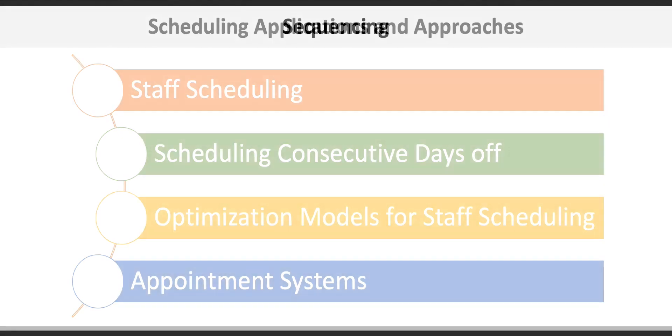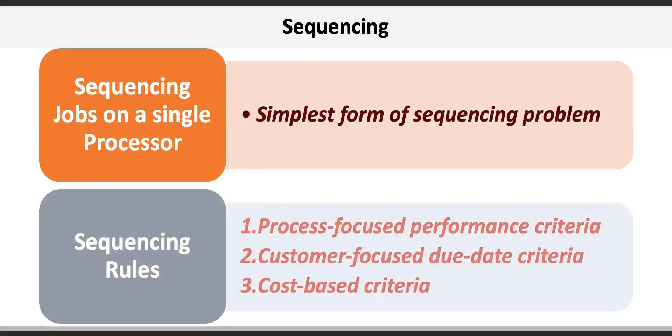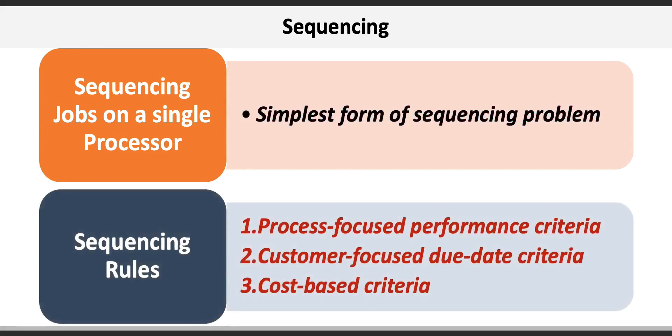The simplest sequencing problem is that of processing a set of jobs on a single processor. This occurs in many organizations. For example, in a serial manufacturing process, a bottleneck workstation controls the output of the entire process. Therefore, it's critical to schedule the bottleneck equipment efficiently. When selecting the most appropriate sequencing rule, a manager must first consider the criteria on which to evaluate schedules. These criteria are often classified into three categories.